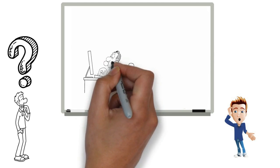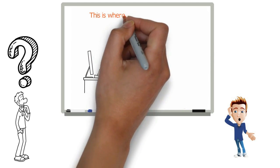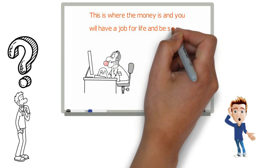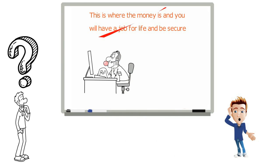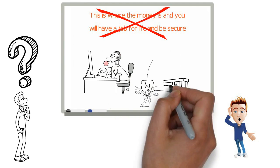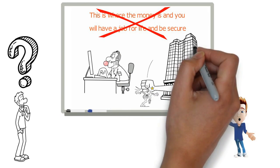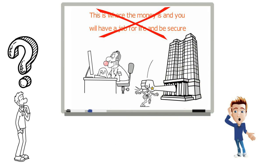Let's look at the third bit of advice. This is where the money is, and you will have a job for life and be secure. Besides being boring to only have one job your whole life, I'm calling BS. Very little is secure these days. Even if the career is safe now, the company may not be, and your method may become redundant, and you with it.